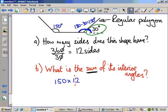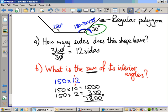And I'm going to think to myself, 150 times 10 is 1500. And I'm thinking to myself, 150 times 2 is 300. And if I add those together, that tells me that my 12 150-degree angles are going to add up to 1,800 degrees.